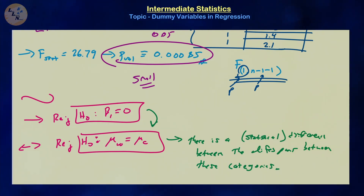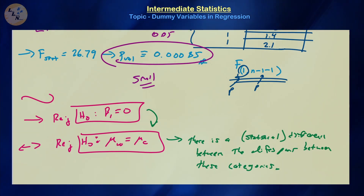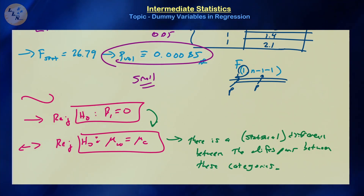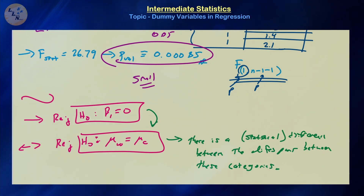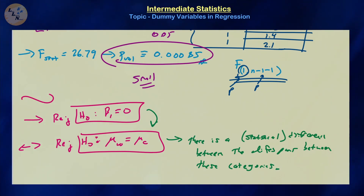That is a brief introduction to dummy variables and how they can be used to model categorical variables in a linear regression framework. These examples were kept small to avoid getting lost in the multiple linear regression case, but you can certainly extend this to models with three continuous variables and five dummy variables — keeping in mind that more variables require more data points. We also see that this is equivalent to testing the equality of means, even for several groups. Take care.